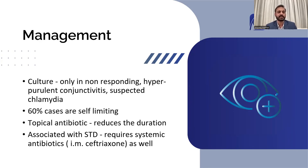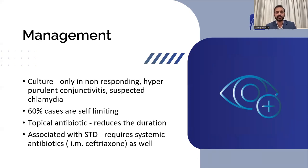60% of cases are self-limiting, and the rest can be treated using topical antibiotics. Topical antibiotics reduce the duration and achieve cure rapidly if the pathogen is sensitive. In special cases like gonorrhea and chlamydia, when systemic symptoms and signs are also present, you need to treat patients not only with topical but also with systemic antibiotics like intramuscular ceftriaxone.